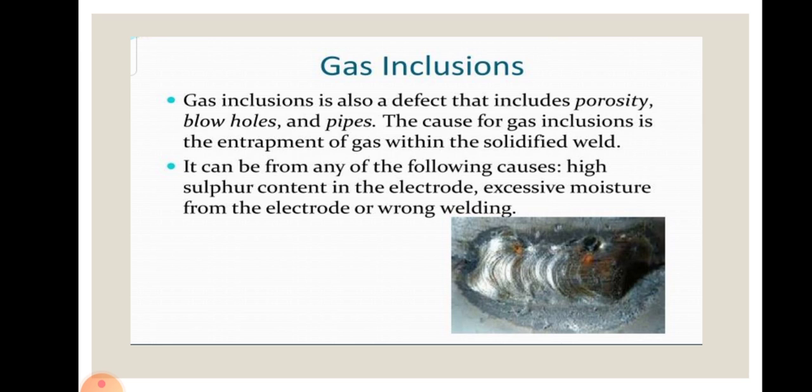Gas inclusion can be caused by high sulfur content in the electrode, excessive moisture from the electrode, wrong type of welding, dirty base metal, high welding speed, electrode with damp and damaged coating, or excess of hydrogen, nitrogen, or oxygen in the welding atmosphere.